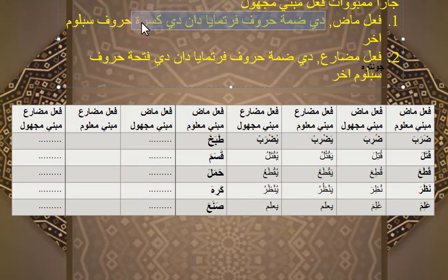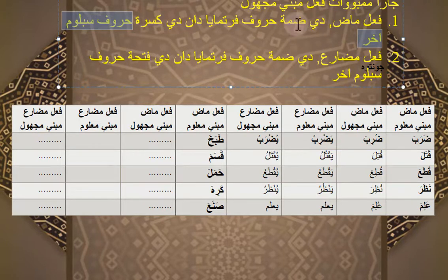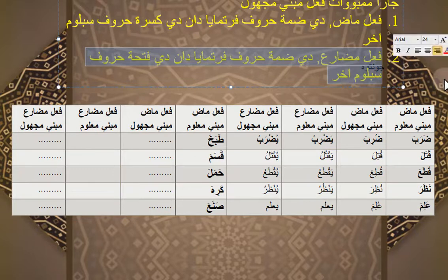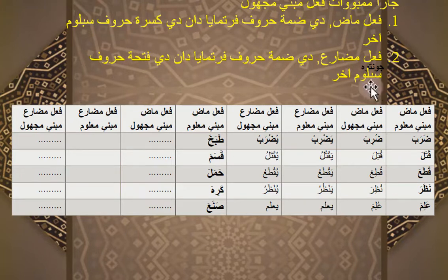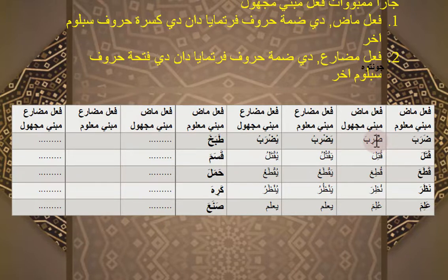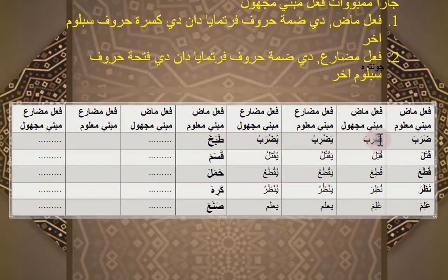Ingat, huruf sebelum akhir. Jadi misalnya akhirnya Ba, maka sebelum Ba itu apa. Cara membuat Fi'il Mabni Majul dari Fi'il Mudhare: di-dhammah huruf pertamanya, dan di-fathah huruf sebelum akhir. Contoh Fi'il Mazi Mabni Maklum Zoroba dijadikan Fi'il Mazi Mabni Majul. Kaedahnya: Zoroba menjadi Zuriba — di-dhammah huruf pertamanya, di-kasrah huruf sebelum akhir. Zoroba memukul, Zuriba dipukul.